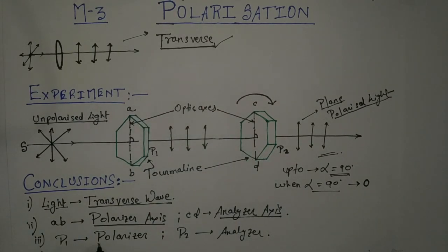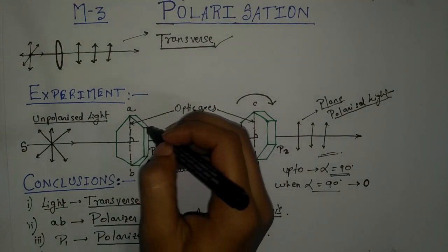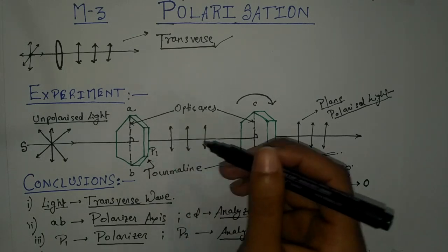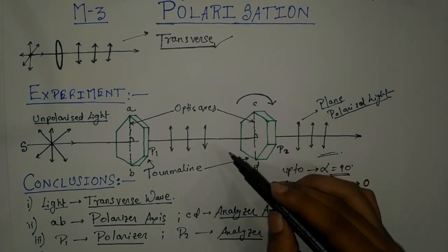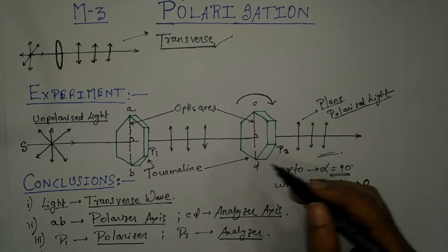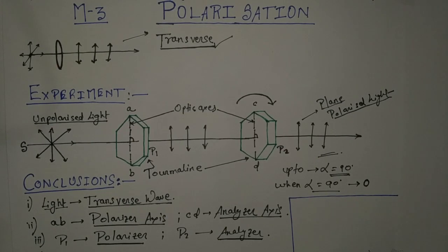Crystal P1 is known as the polarizer, and crystal P2 is known as the analyzer, since it analyzes the polarized light emerging from P1 — determining whether it is passing through an axis parallel to AB or not. Hence P2 is the analyzer and P1 is the polarizer. This proves that light is a transverse wave. After understanding this experiment and its conclusions, let us now look at the pictorial representation of polarized and unpolarized light.